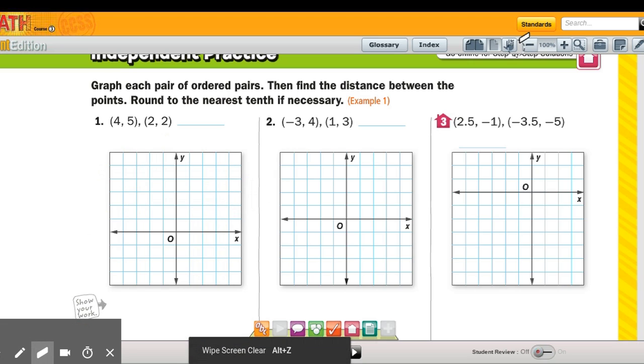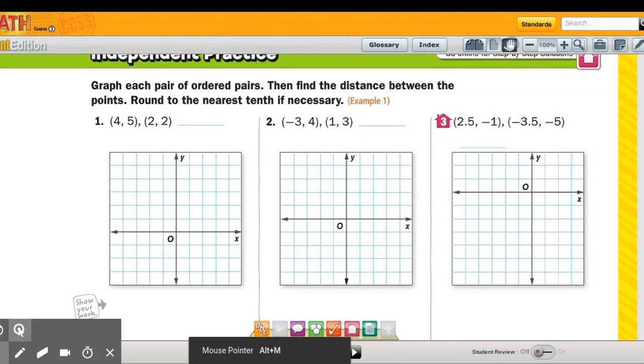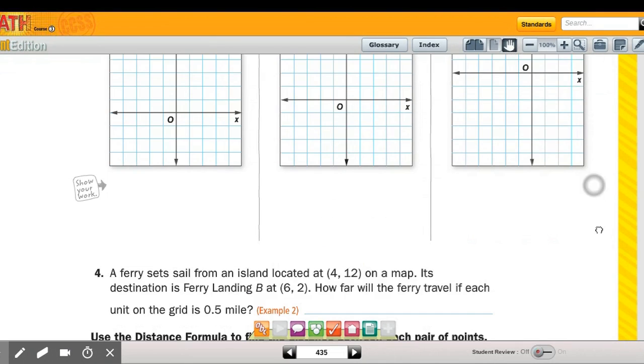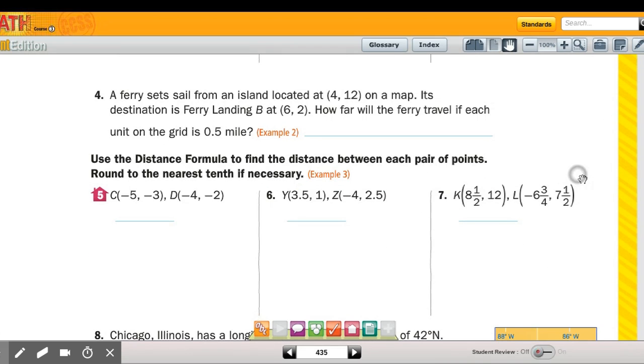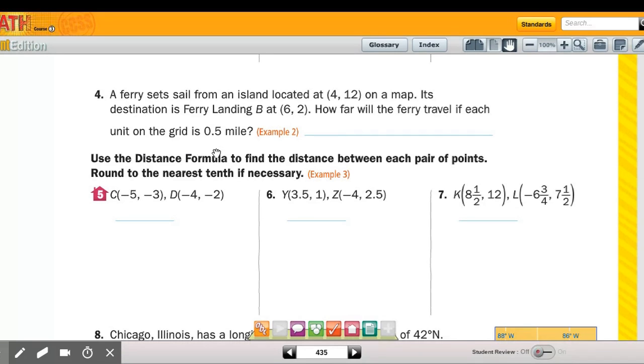So you can do it that way if you want to use the distance formula the whole time. That's fine too, because like number four here, they give you a couple ordered pairs. And now this is an interesting one because they say that each unit on the grid is half a mile.